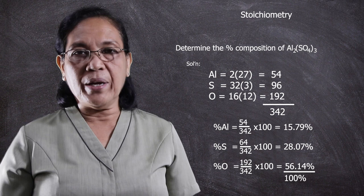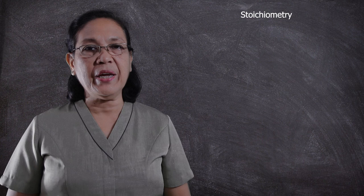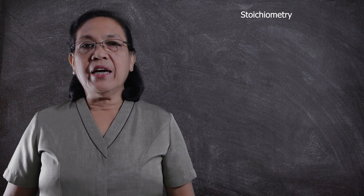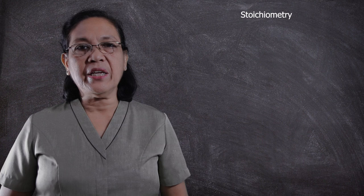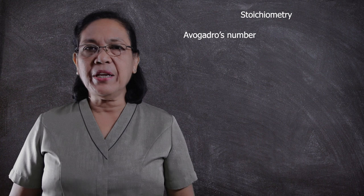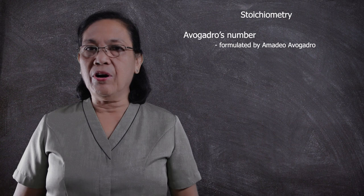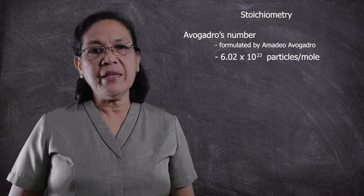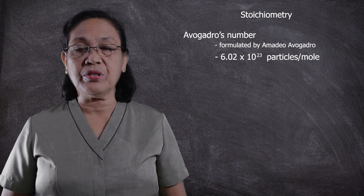Another relationship we can get from the formula of a compound is the number of atoms, ions, and molecules. We can get the number of atoms, ions, and molecules by using Avogadro's number. This Avogadro's number was formulated by Amadeo Avogadro, and it has a value of 6.02 times 10 to the positive 23 particles per mole. This implies that the particles may be the number of atoms, the number of ions, or the number of molecules.